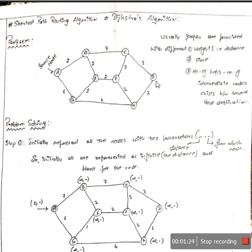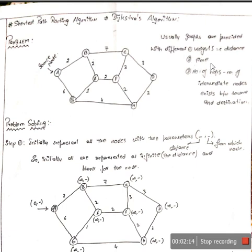Before we begin, I want to clarify that the values you see on the graph — 2, 7, 2, 2, 3, etc. — represent distance, but can also represent cost or time. For example, the cost to move from node A to node B is 2, or the distance is 2 kilometers. In an exam, the question may express these values as weight, distance, cost, or time — such as two minutes or two seconds.